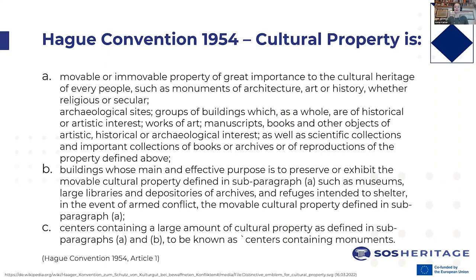Cultural property is defined in the Hague Convention of 1954 — the convention for protecting cultural property during armed conflict. In this convention, cultural property is defined as movable or immovable property of great importance to the cultural heritage of every people, such as monuments of architecture, art or history, whether religious or secular; archaeological sites; groups of buildings which as a whole are of historical or artistic interest; works of art, manuscripts, books and other objects of artistic, historical or archaeological interest; as well as scientific collections and important collections of books, archives, or reproductions of the property defined above.